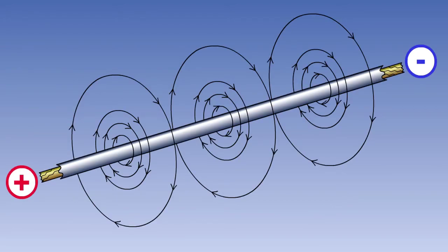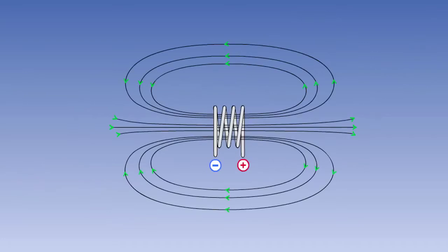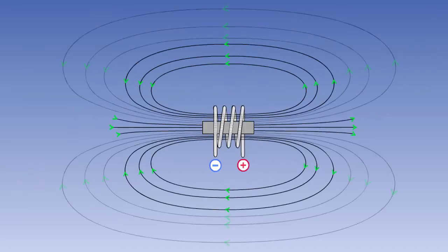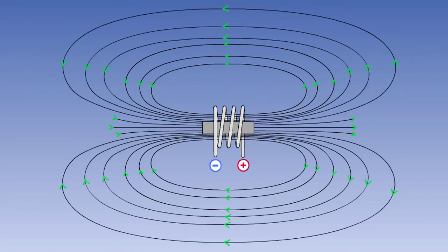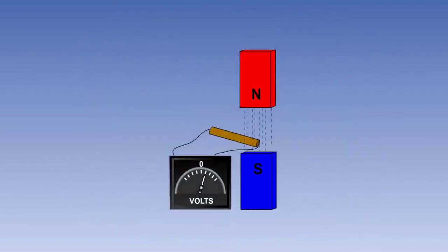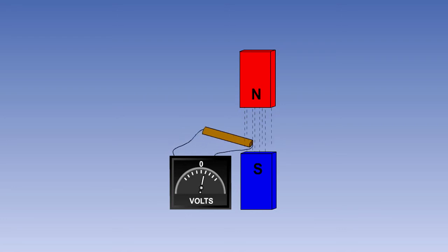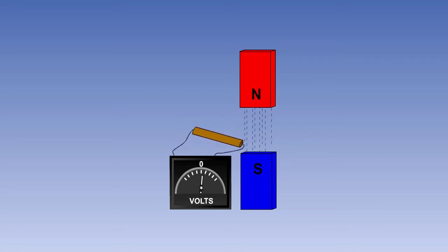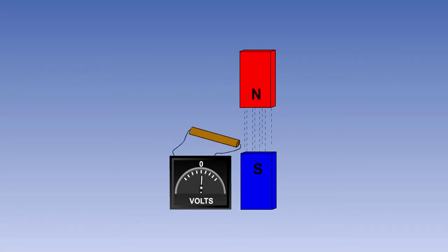We know from previous lessons that when a current passes through a conductor, a magnetic field is produced, and that the strength of the magnetic field can be enhanced by wrapping the wire in a coil and giving it a soft iron core. We also know that when a conductor is moved through a magnetic field, cutting the lines of flux, an electromotive force is induced in the conductor. It is these principles that are used in transformers.